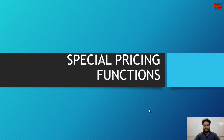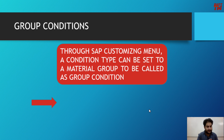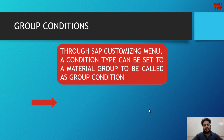Hello students. In this video we are going to study about special pricing functions, but we will cover those after this foundational concept. To start with special pricing functions, we need to understand one very important term: the group condition. A group condition is a condition applied over a group — that group can be either a material group or a customer group.